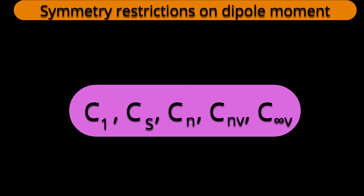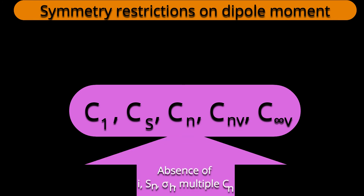For Cn, permanent dipole moment will be there and direction will be along the axis of symmetry — for example, H2O2. For Cnv, permanent dipole moment will be there but exact direction we cannot predict — for example, C2v water molecule. For C∞v, such as HCl, permanent dipole moment will be there along the principal axis. The difference between Cnv and C∞v is that in Cnv the exact direction cannot be predicted, but for C∞v it can.